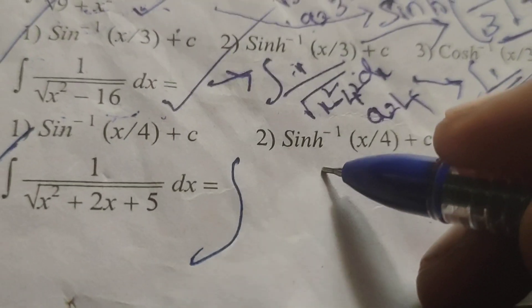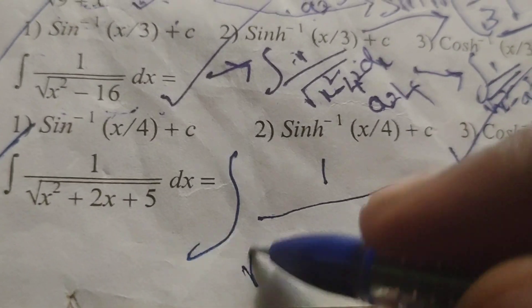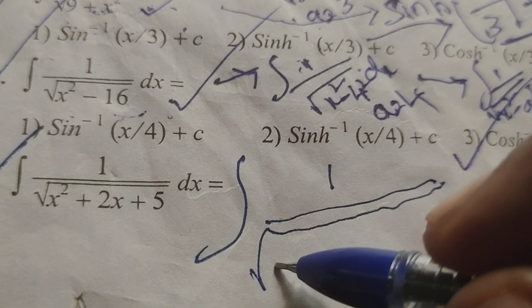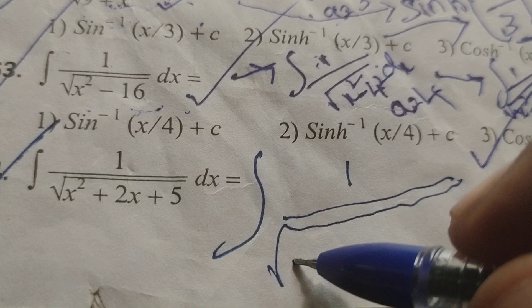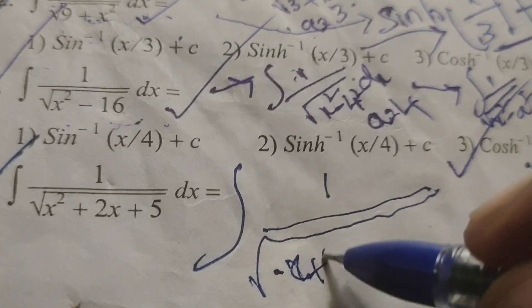First of all the given integral problem, here I write integral of 1 by root of x square plus 2x plus 5 according to this a plus b whole square formulae. Here in this term write x plus 1 whole square.